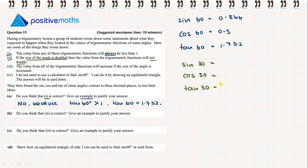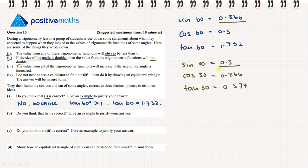Going to our calculator: sine of 30 is equal to 0.5, cosine of 30 is 0.866, and tan of 30 is 0.577. We see that we have doubled the angle going from 30 to 60, but the trigonometric function does not double. The sine of 30 is 0.5 and the sine of 60 is 0.866, so it has not doubled. Do we think statement 2 is correct? Yes, because the sine of 60 is not twice the sine of 30.